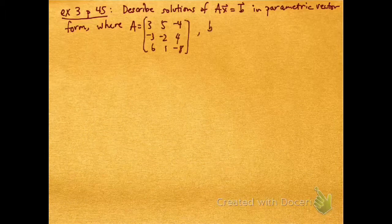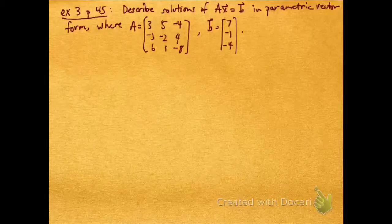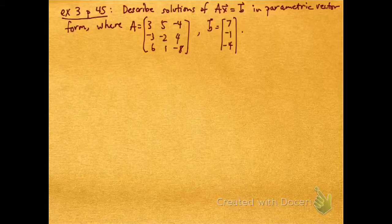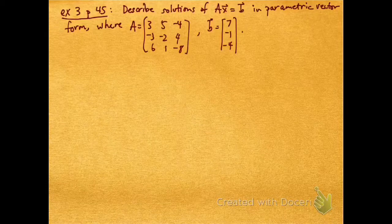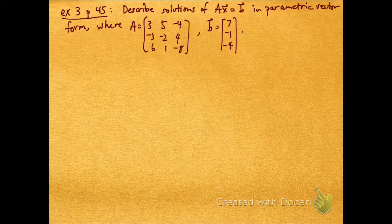Suppose we want to describe the solutions of AX equals B in parametric vector form, where A is this matrix: 3, 5, -4 in the first row; -3, -2, 4 in the second row; 6, 1, -8 in the third row. And B is the column vector 7, -1, -4.